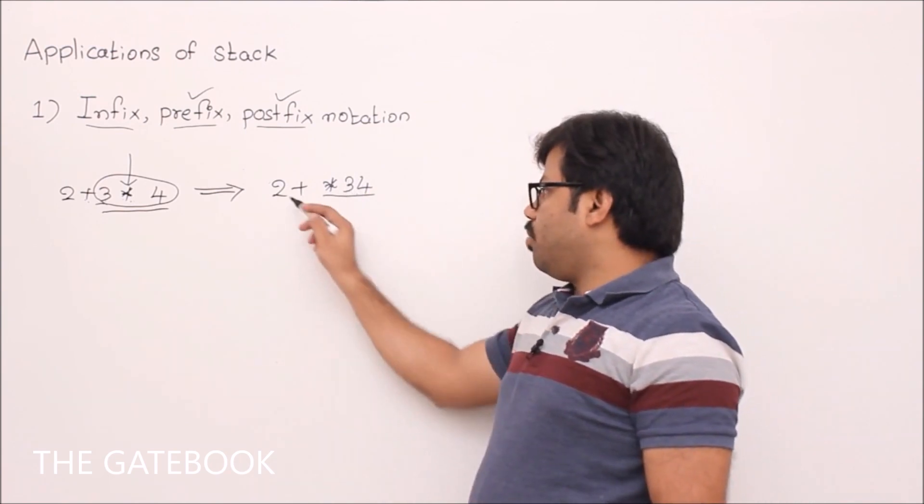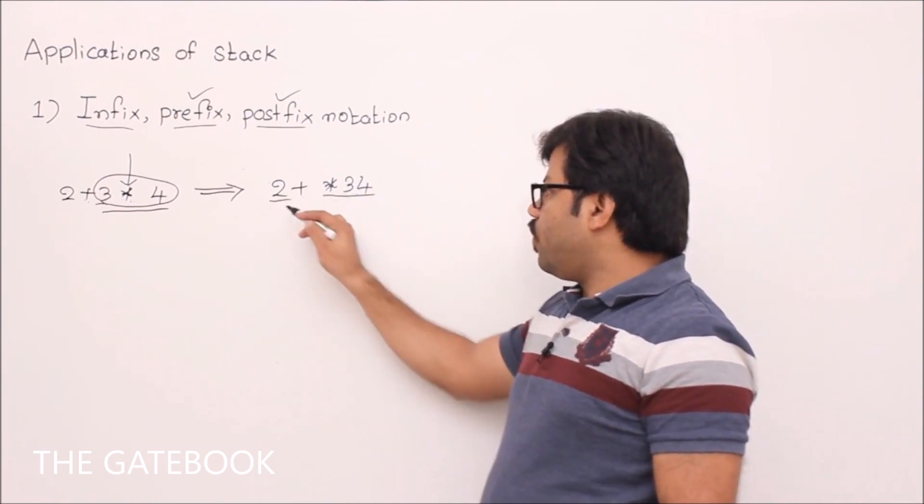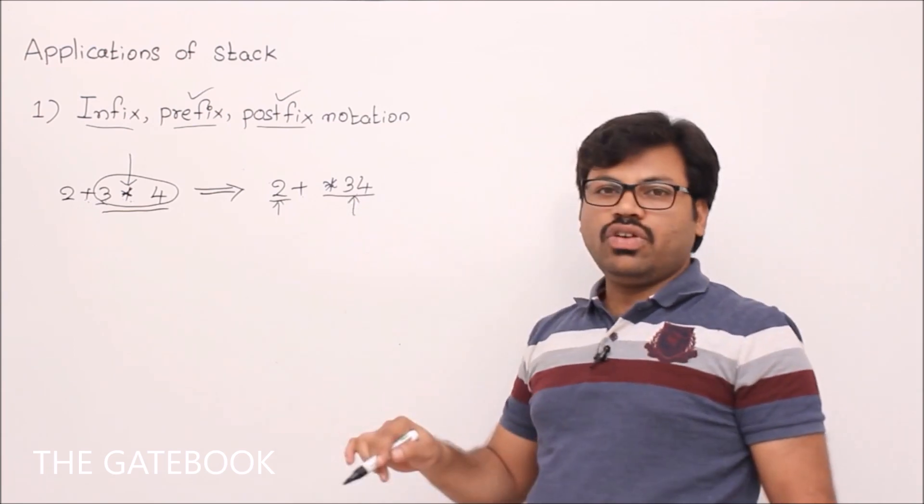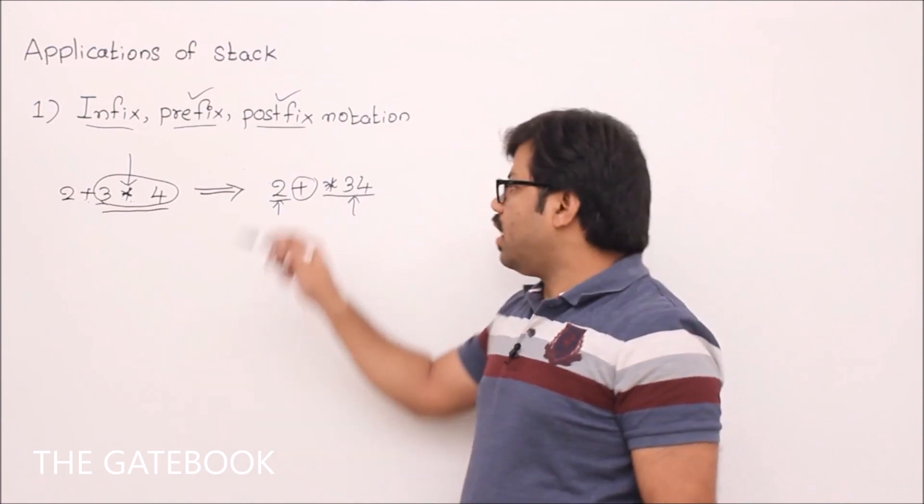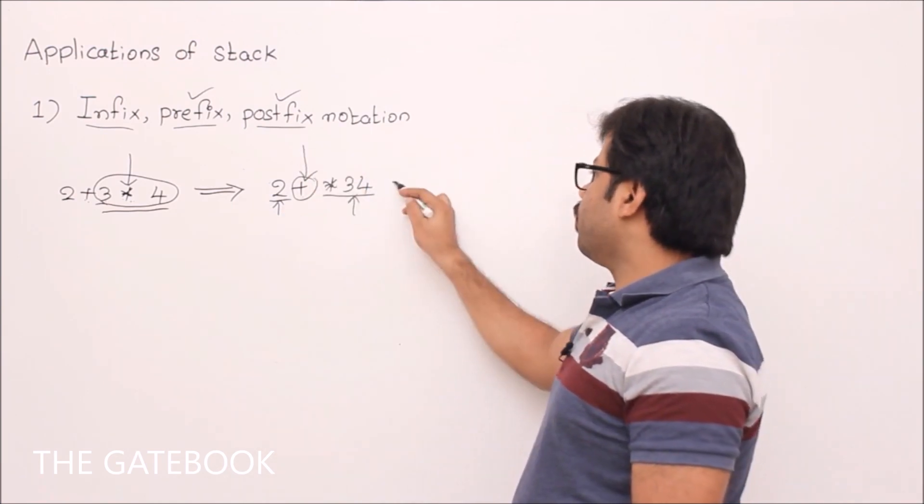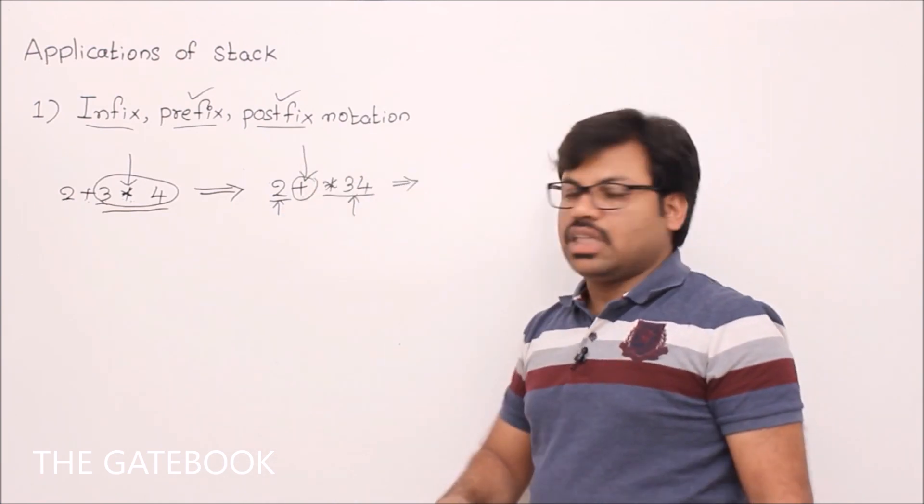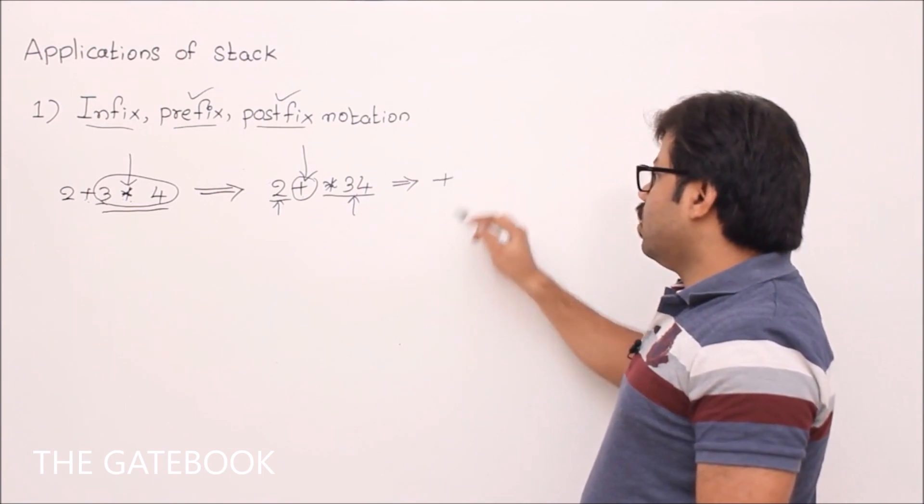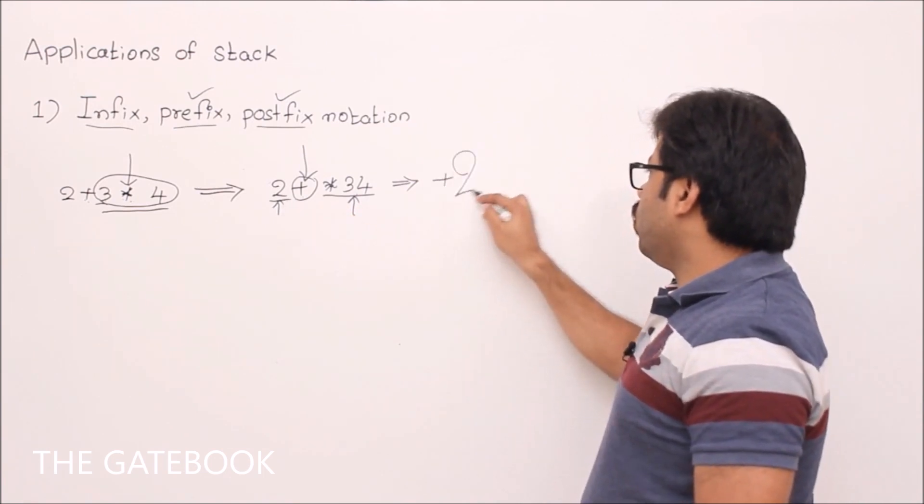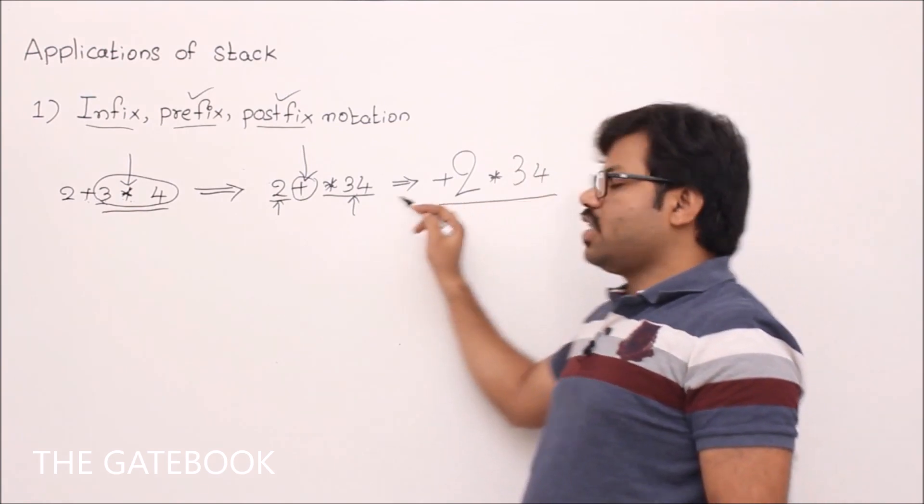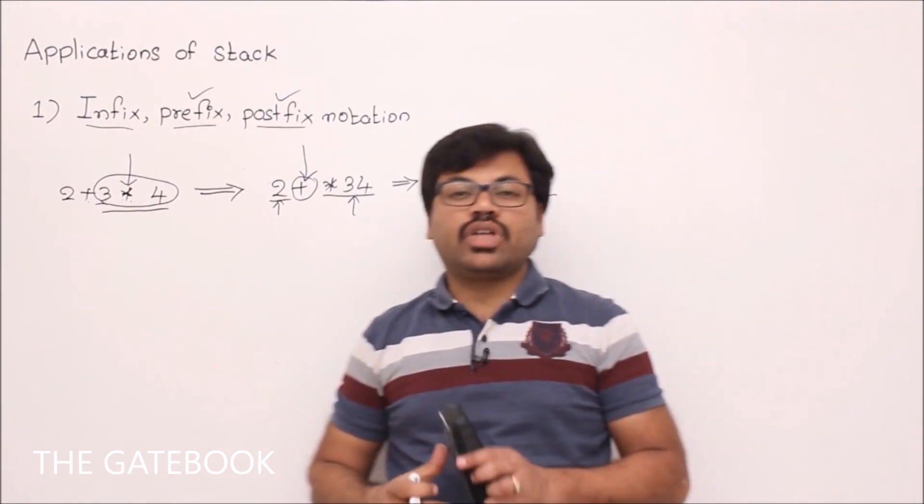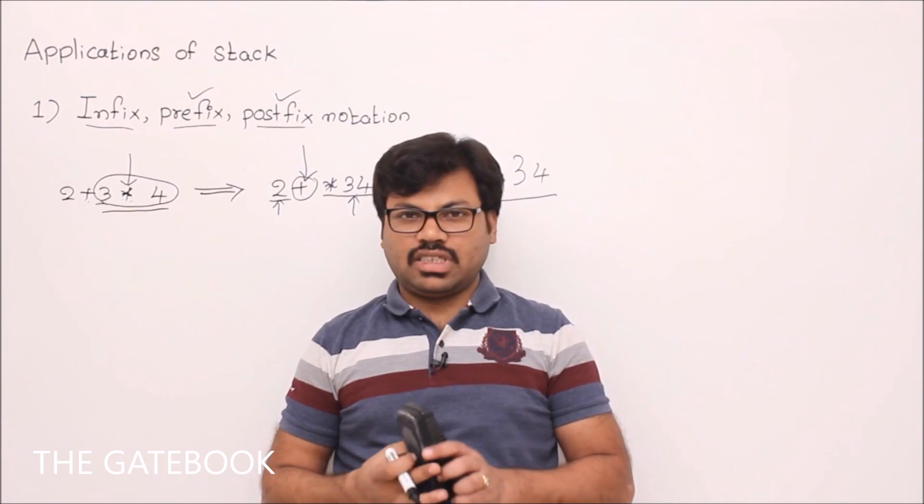Now again, problem is reduced to you have two operands. One is 2. One is this one, star 3 4. And you have only one operator. Then simply convert that operator to prefix. That will become plus and operand number 1, 2, operand 2 is star 3 4. That's it. So this is the prefix expression.